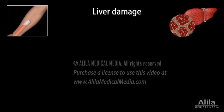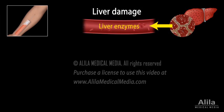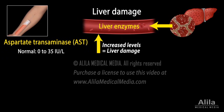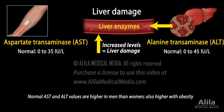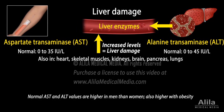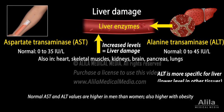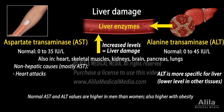When liver cells are injured, their content, including liver enzymes, are leaked into the bloodstream. The levels of these enzymes can be measured to assess the extent of liver damage. Two enzymes are usually included in a hepatic panel: aspartate transaminase, AST, and alanine transaminase, ALT. Both are involved in protein metabolism in the liver. AST and ALT are present at high concentrations in the liver, but are also found in a number of other tissues. ALT is more sensitive and specific for liver damage than AST. AST and ALT elevations may also result from non-hepatic causes.